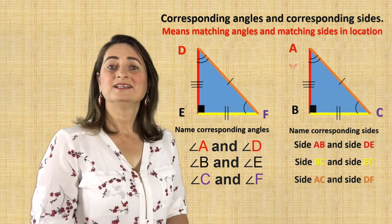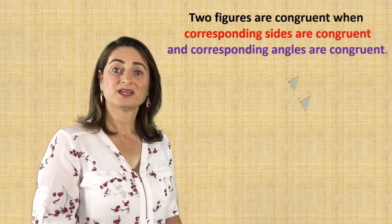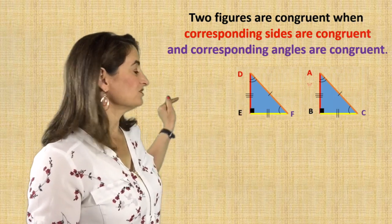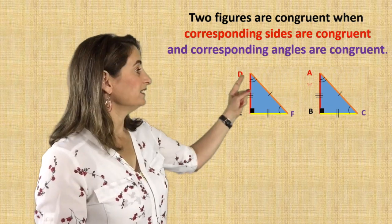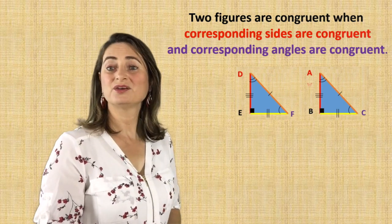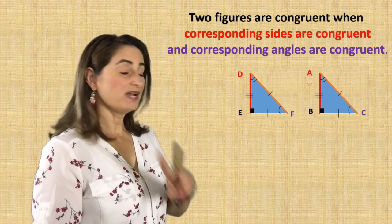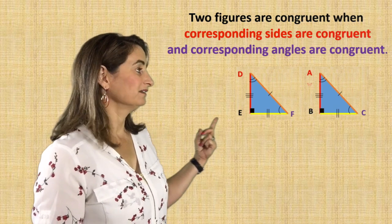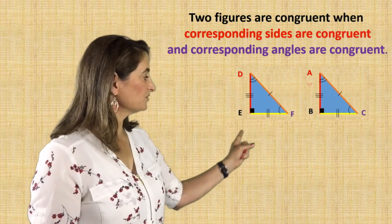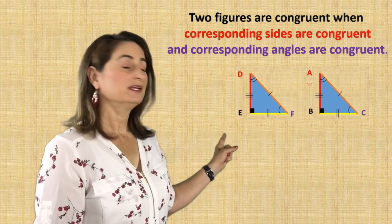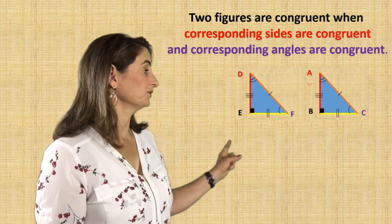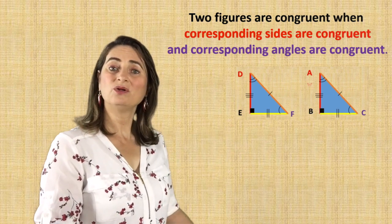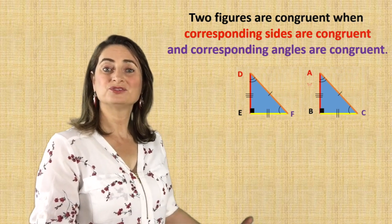Now we've identified the corresponding angles and sides. Are the angles and sides congruent? Look at the triangles. Side AB has three dashes, same as DE — those two sides are congruent. Side AC has one dash, and side DF has one dash — they are congruent. Side CB has two dashes and side FE has two dashes — they are congruent. Angle C and angle F each have one arc, so they are congruent. Angle A and angle D each have two arcs. Angles B and E are right angles. So all the angles are congruent and all the sides are congruent — therefore the two figures are congruent.